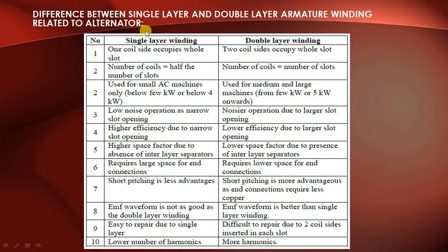Now we will see the difference between single layer and double layer armature winding. First difference: in single layer winding, one coil side occupies the whole slot; in double layer winding, two coil sides occupy the whole slot. Second difference: in single layer, the number of coils equals half the number of slots; in double layer, the number of coils equals the number of slots.